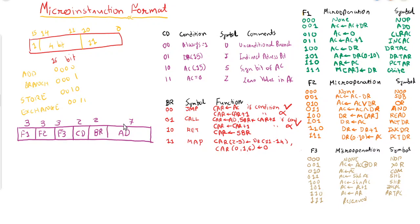The 7-bit address represents the address of the next micro instruction. The BR field specifies the branch address — where control goes next. The 2-bit condition field (CD) gives 4 possible combinations: 00, 01, 10, and 11. Field 1, Field 2, and Field 3 specify the micro operations to be performed.